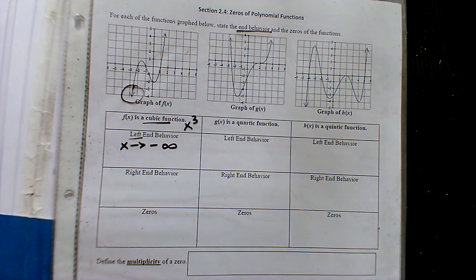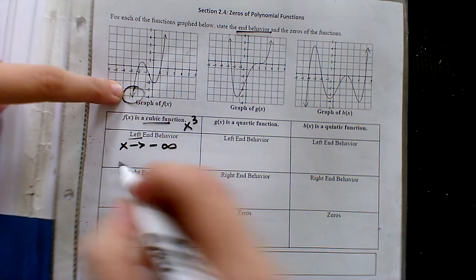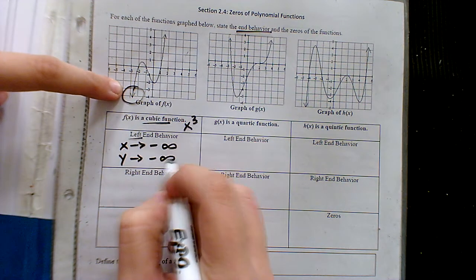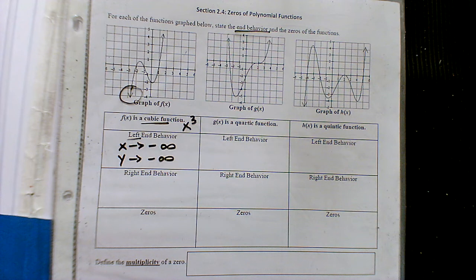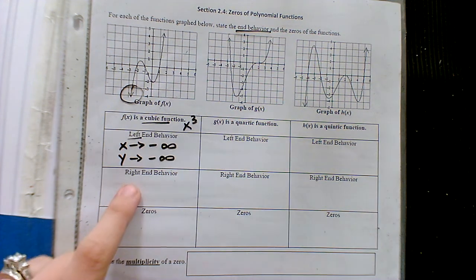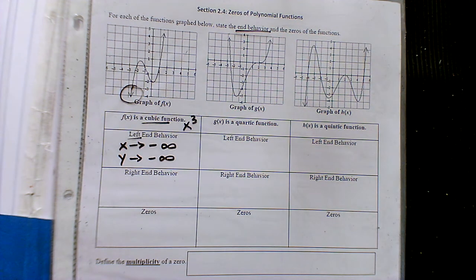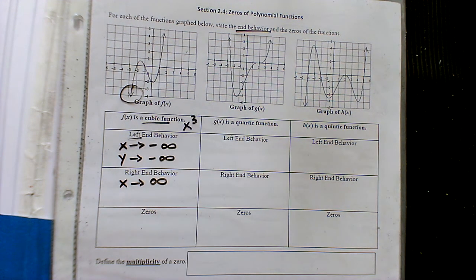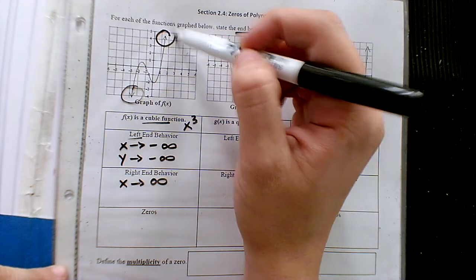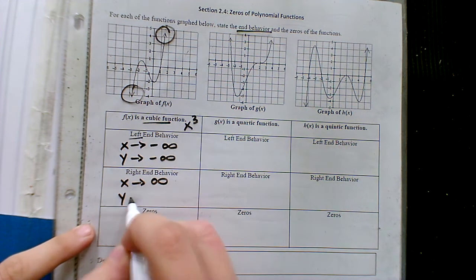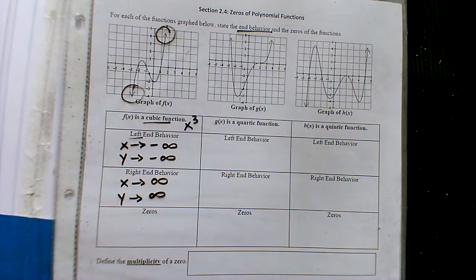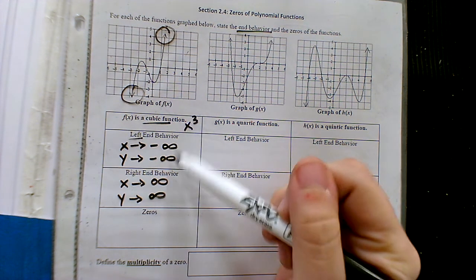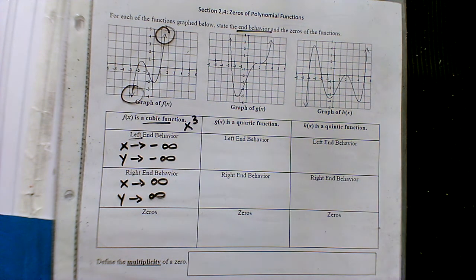Based off this particular graph, if we see the left-hand side going down, the y values are also getting close to negative infinity. Whenever you're describing end behavior, you need two comparisons: what are the x's doing, and what are the y's doing. For right end behavior, the x's are increasing forever — positive infinity. For this graph, the right-hand side goes up forever, so the y's approach positive infinity. Don't assume they're always the same sign — it just happens that way for this example.